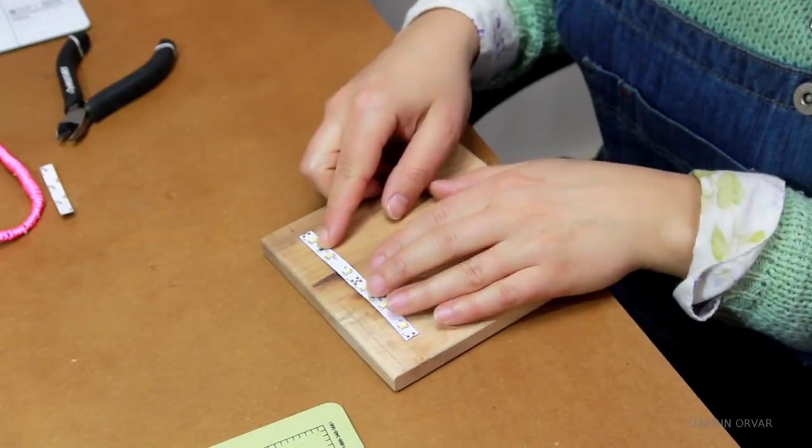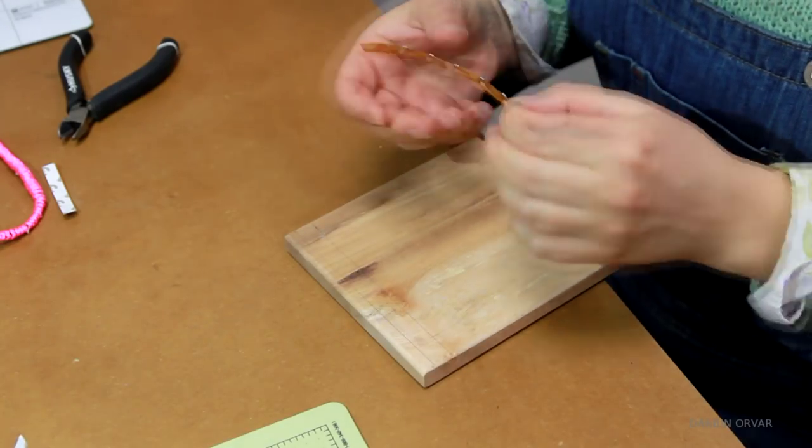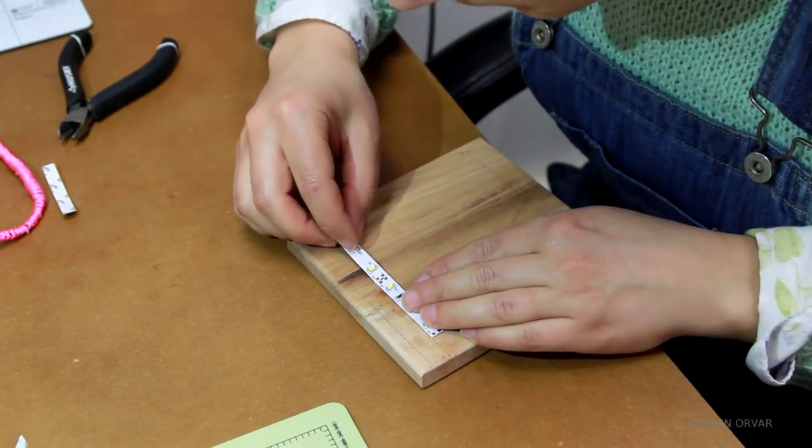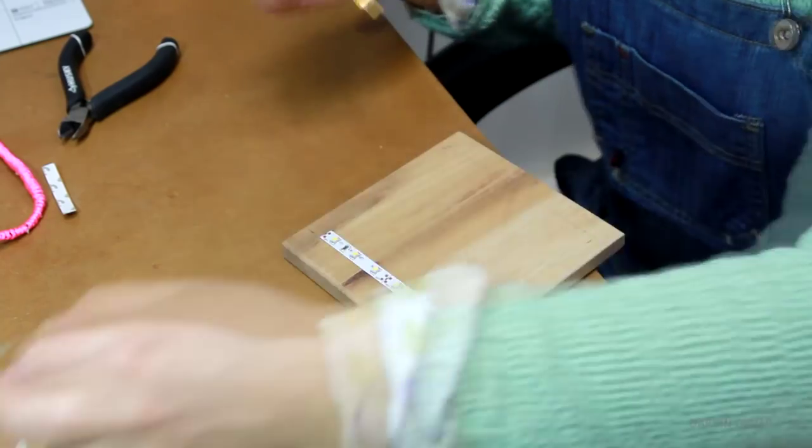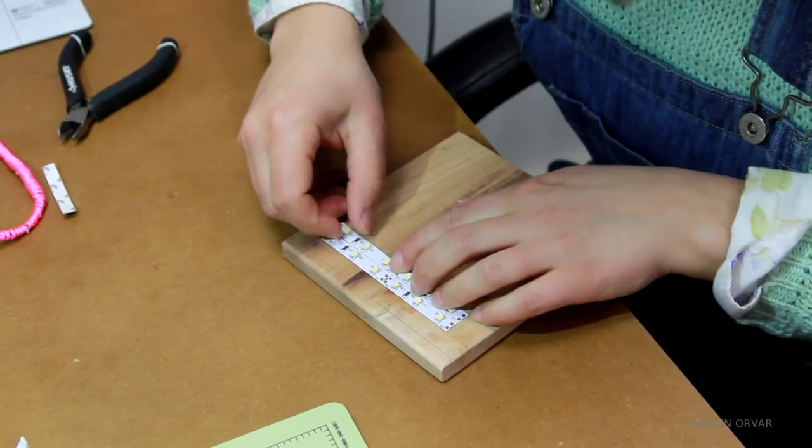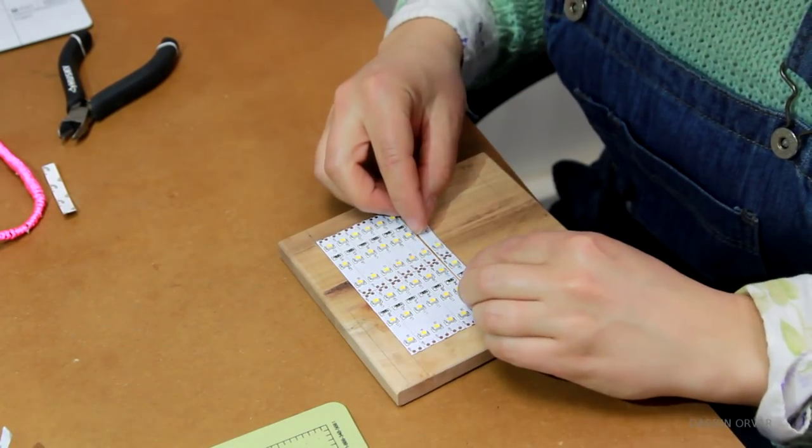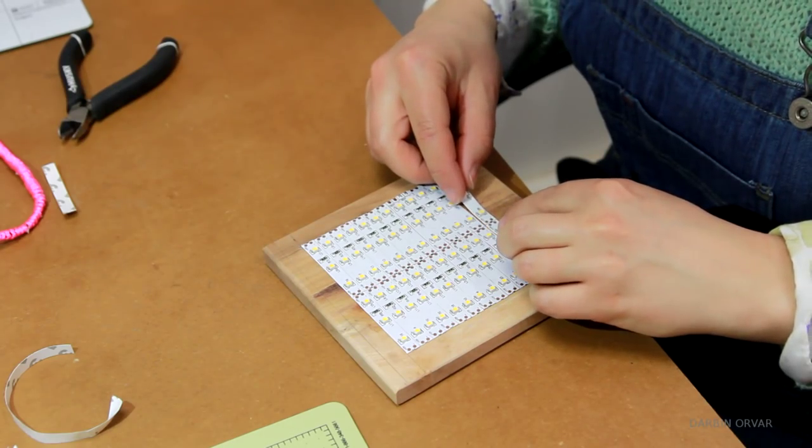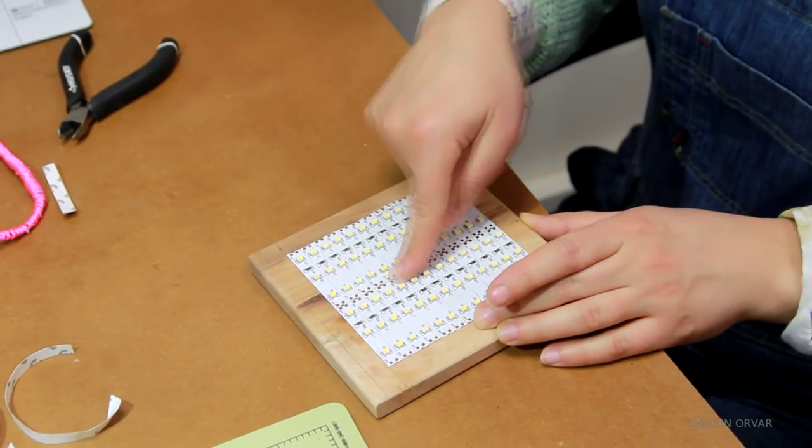Then you simply peel off the back, and stick the strip to the wood. And it adheres pretty well to unfinished wood. Then making sure each strip is well attached.